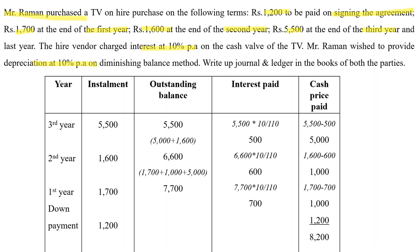I have uploaded another video explaining how to calculate interest under various methods — the link is in the description box. For the calculation of cash price, I have provided a table with five columns: year, installment, outstanding balance, interest paid, and cash price paid. We should start from the last year onwards. The last payment is the third year installment of ₹5,500.